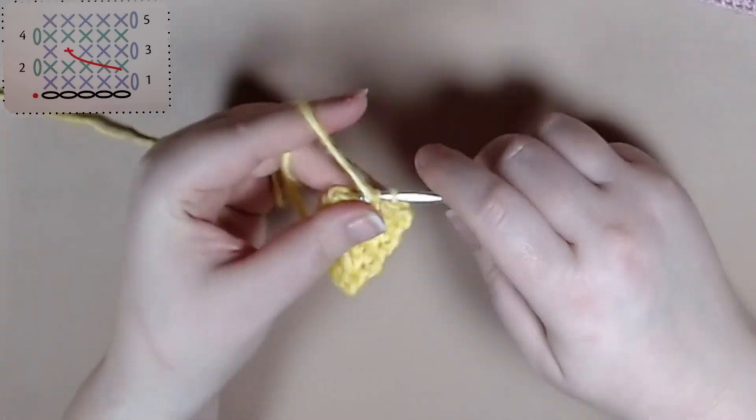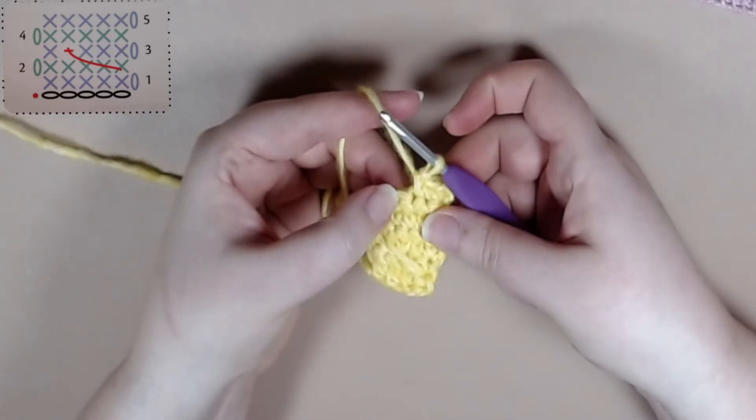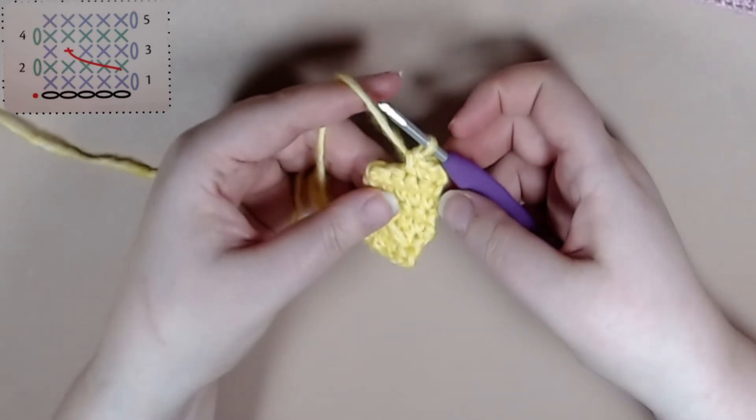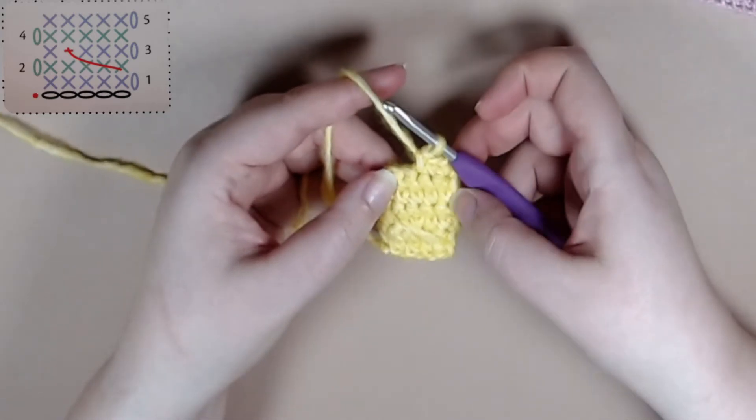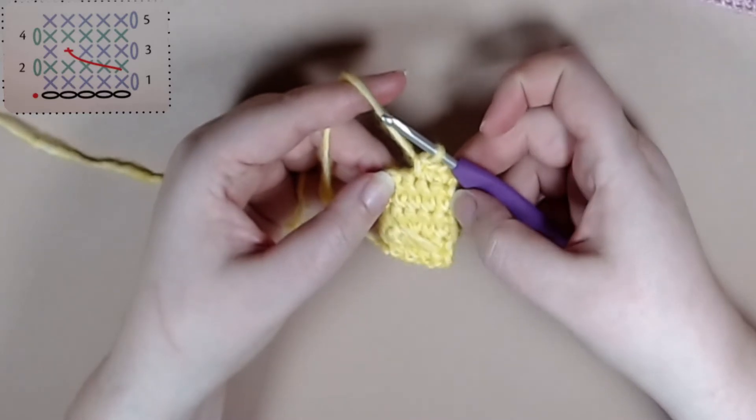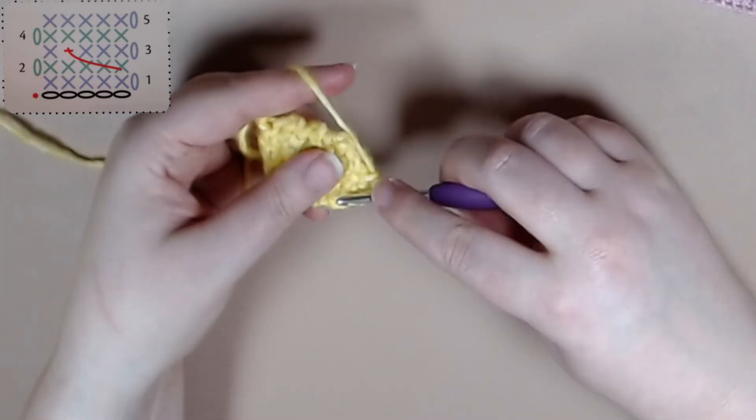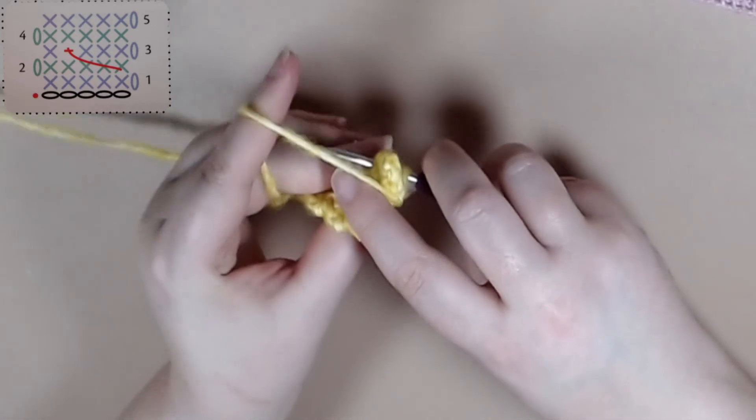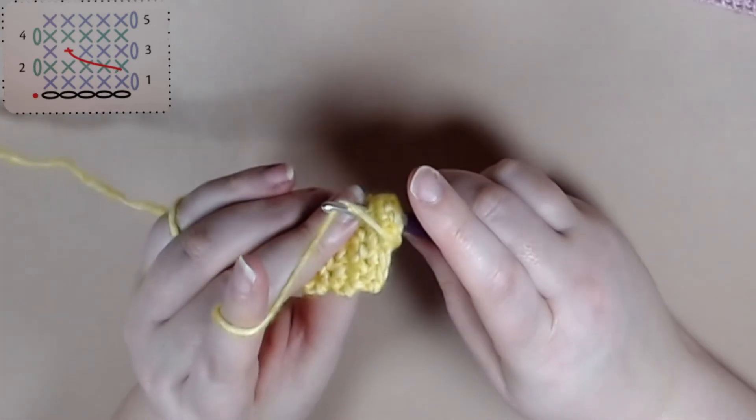That next stitch will always be unfinished. We will never crochet in that one. Instead you'll crochet in the row below three stitches back. And once you do enough of these everything will start lining up a lot better and it'll get faster to do.